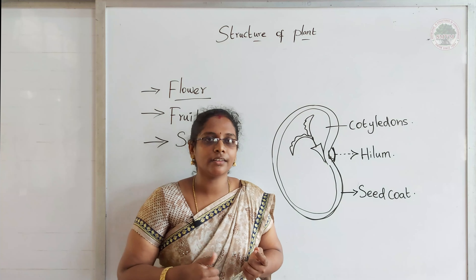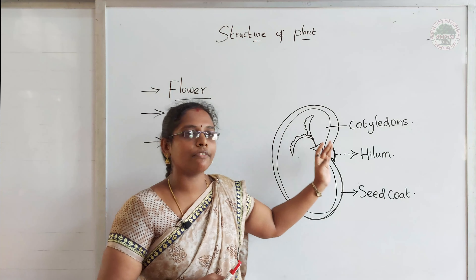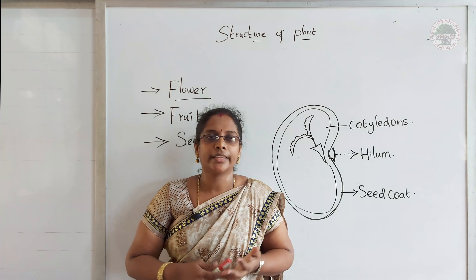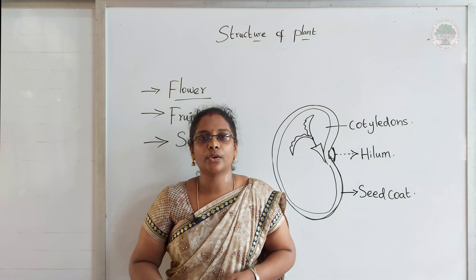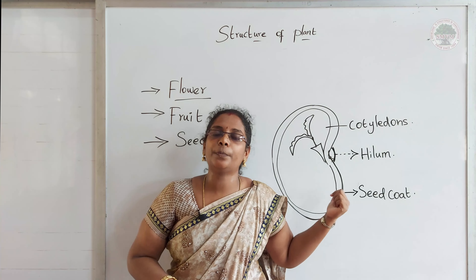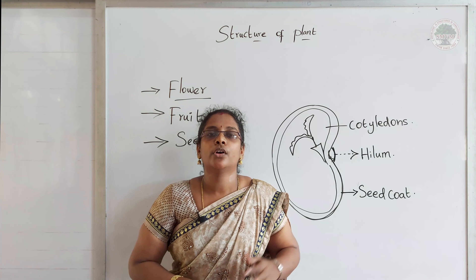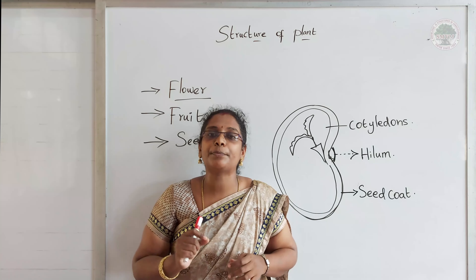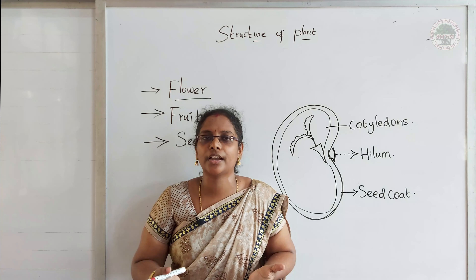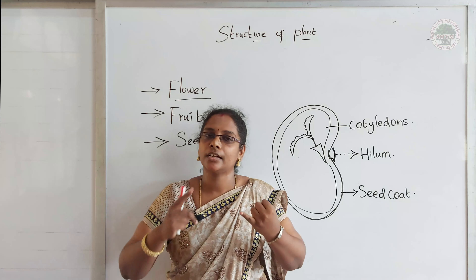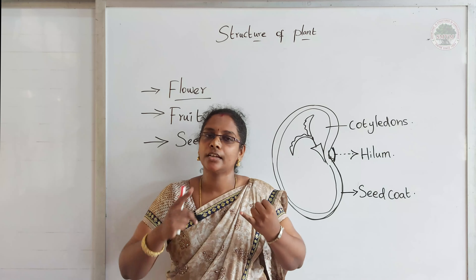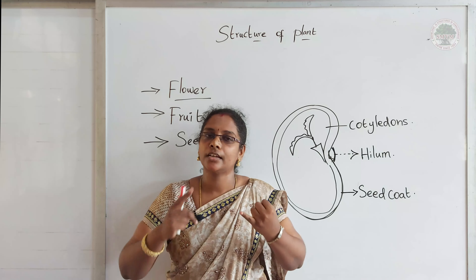The baby plant grows inside and later it will come out through the hilum. The cotyledon is also called the seed leaf, and through it the baby plant consumes its nutrients. This is the structure of the seed. The function of the seed is to produce a new plant — from the seed only the new plant will start to arise. So today we have discussed about the reproductive parts of a plant: flower, fruit, and seed. Thank you.